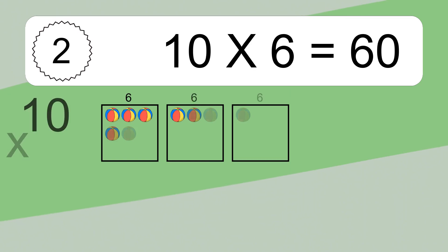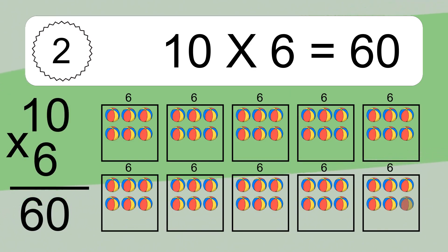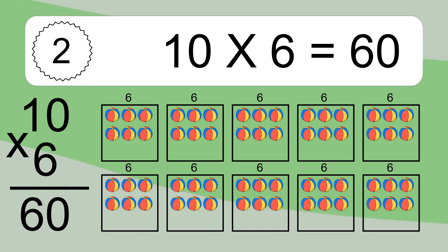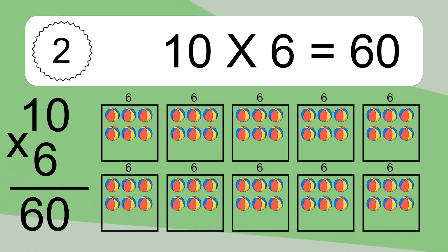10 times 6 equals 60. We have 10 boxes, and each box has 6 colorful balls inside. If you count all the balls in all the boxes together, you will have 10 times 6 balls. This equals 60 balls.